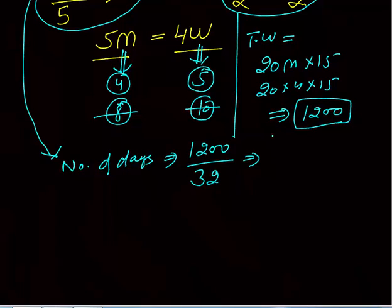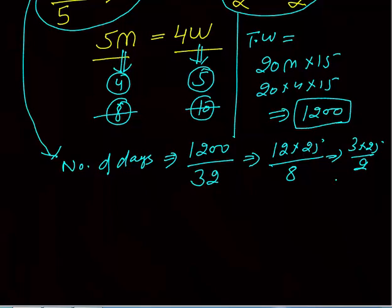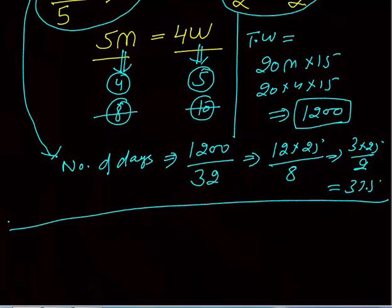We can cancel: twelve hundred divided by thirty-two — cancel by four gives twelve into twenty-five by eight, then cancel again to get three into twenty-five divided by two equals thirty-seven point five. So three men and four women will take thirty-seven point five days to complete the work.